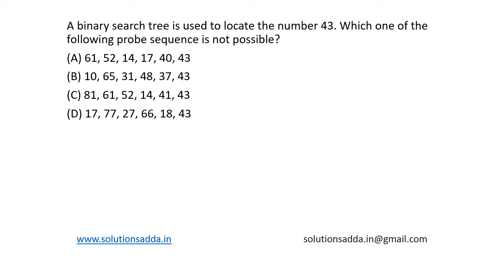This is a question from data structures. A binary search tree is used to locate the number 43. Which one of the following probe sequences is not possible? Let's see each option. Option A: we have root as 61.